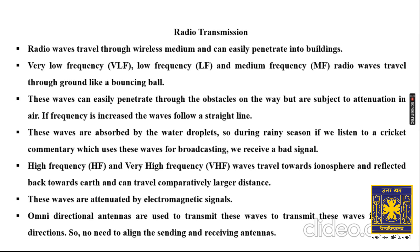Radio signals can work in various frequencies: VLF (very low frequency), LF (low frequency), and MF (medium frequency). These types of radio waves travel through the ground in a path like a bouncing ball — when you throw a ball, it travels toward its destination by bouncing, and the radio waves travel similarly along that trajectory.